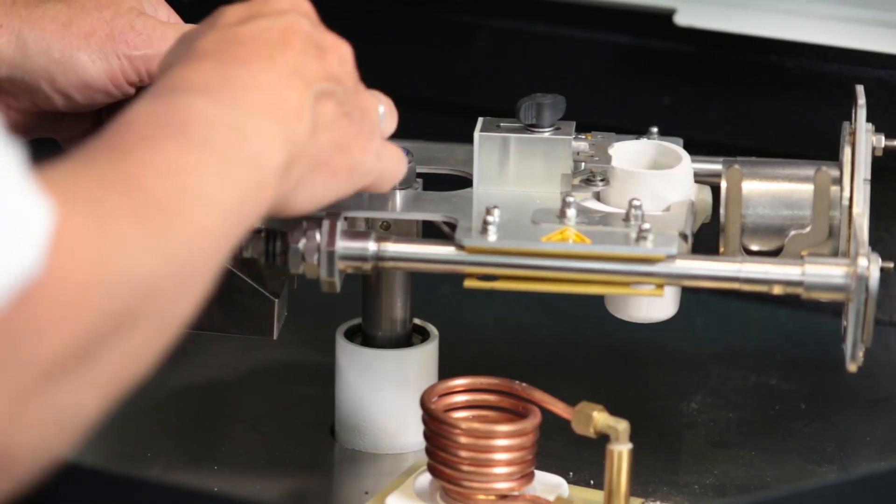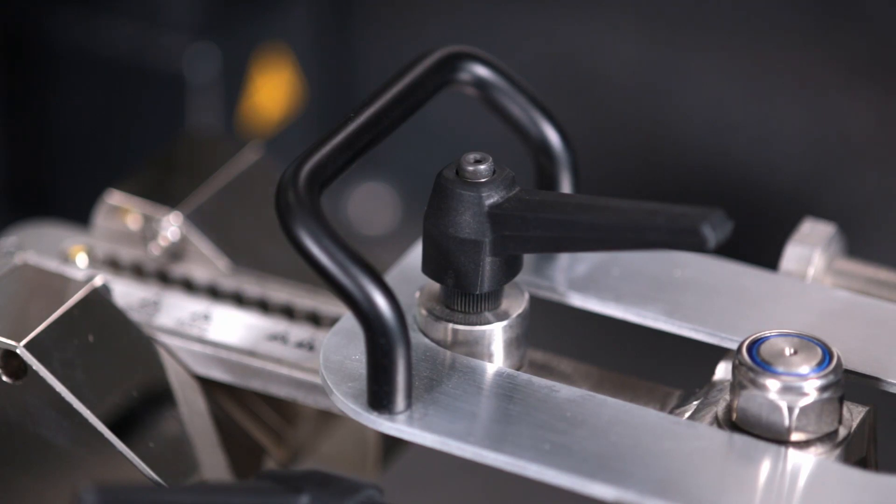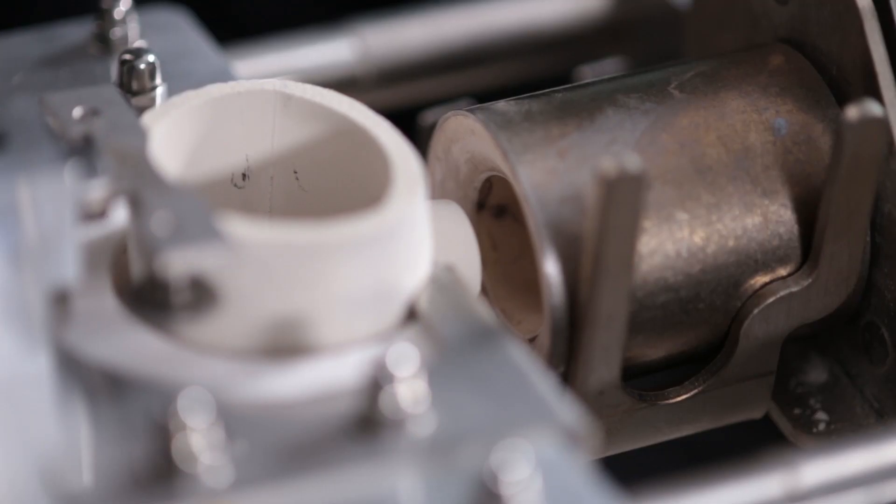The adjustment of the slider is done with the clamping lever. The crucible outflow opening should be located inside the casting funnel of the mold.